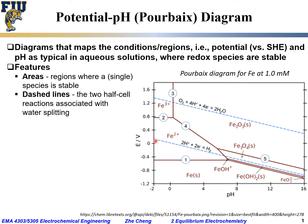We also have two blue dashed lines. These two dashed lines represent the two half-cell reactions associated with water splitting. The bottom one represents the reaction from proton to hydrogen gas, and the top one represents the reaction from oxygen and proton to water. We will discuss these two half-cell reactions in a moment.